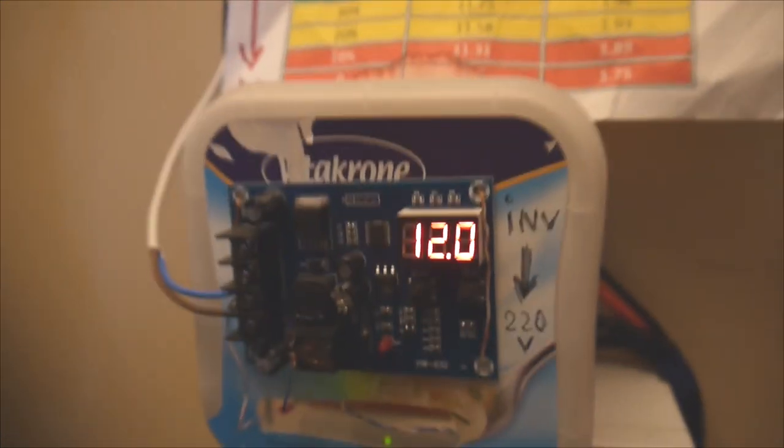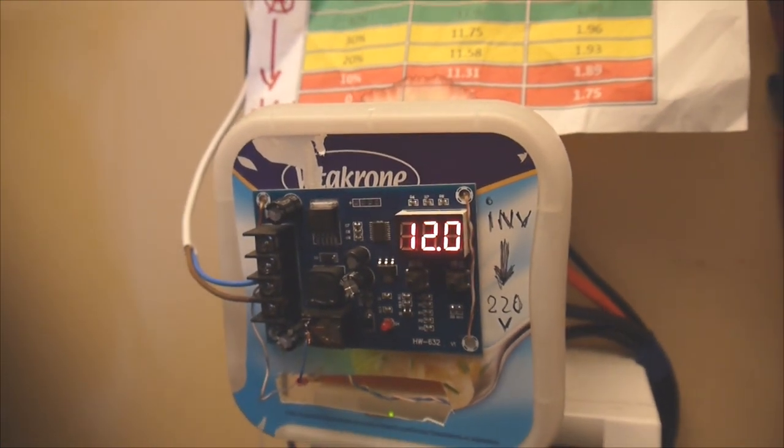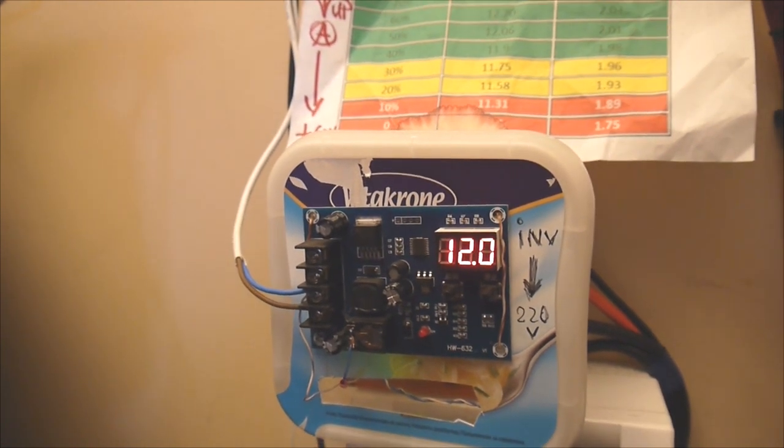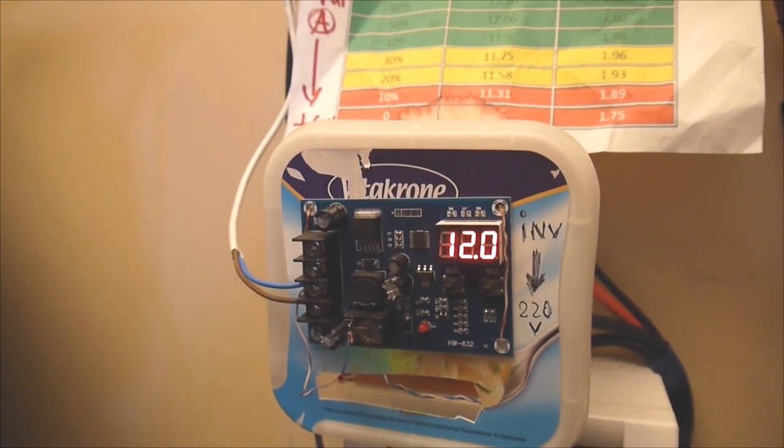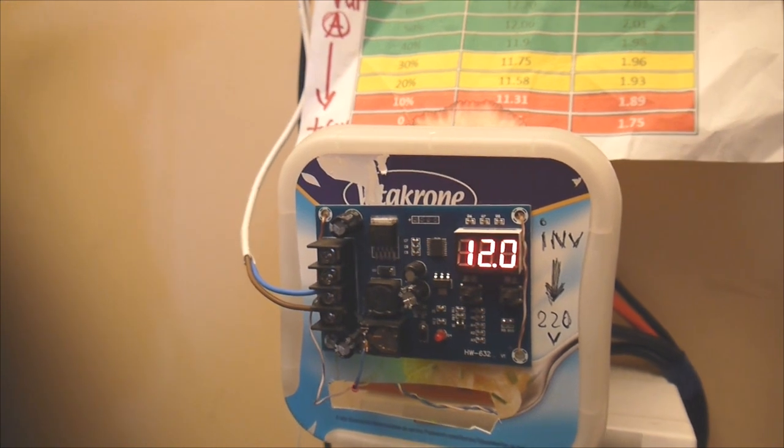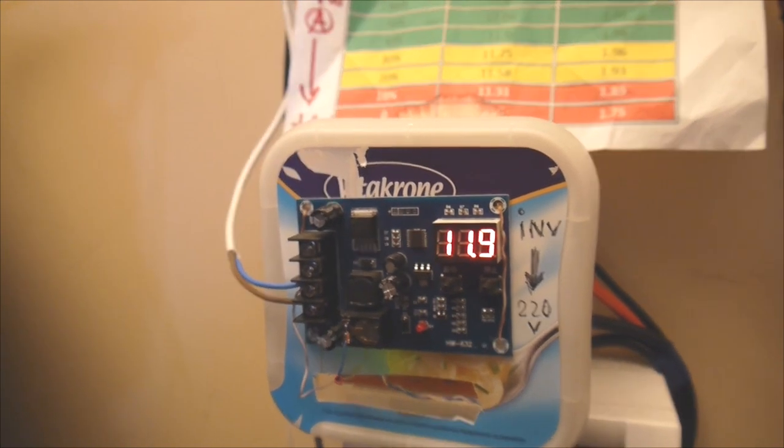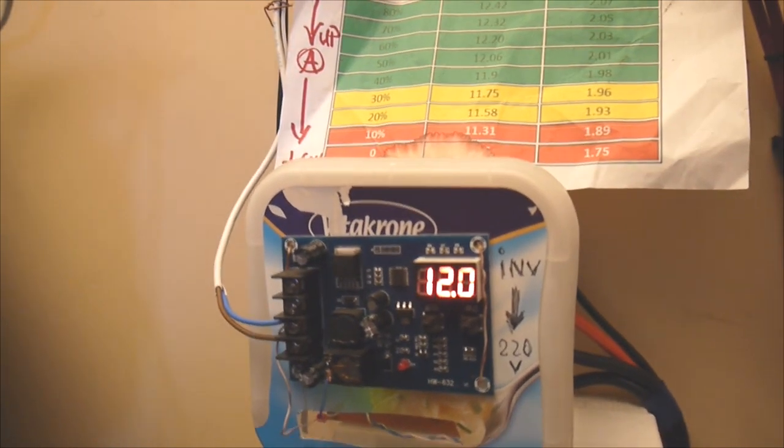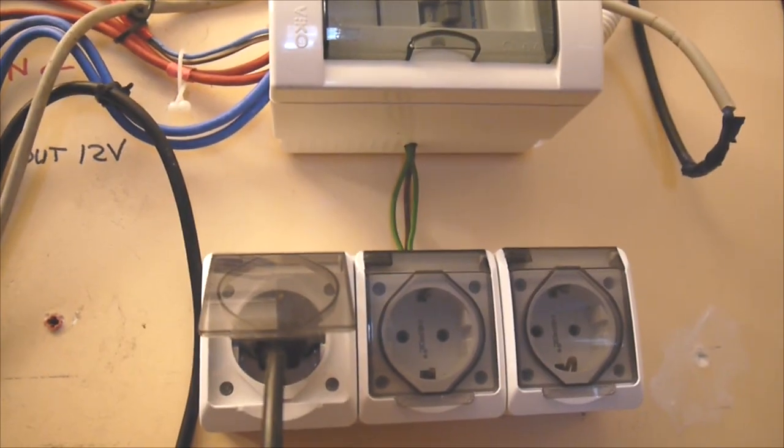So, this little one can do a switch. When the voltage is dropping under 12.1, it's disconnecting the inverter and it's just connecting the consumer. You see, this is my main consumer here. It's connecting the consumer to the main, to the grid somehow. Yeah, of course. Okay.